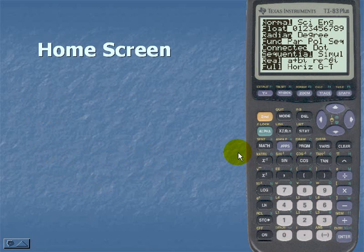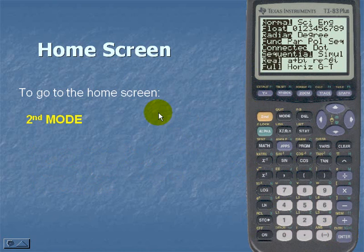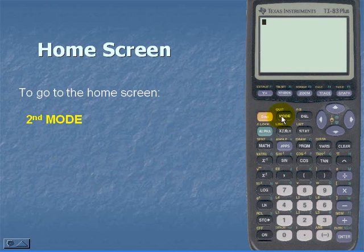Next we'll take a look at the home screen. To go to the home screen, hit second and MODE. Notice that the QUIT key is yellow so it's a second function. This quit takes us to our home screen.